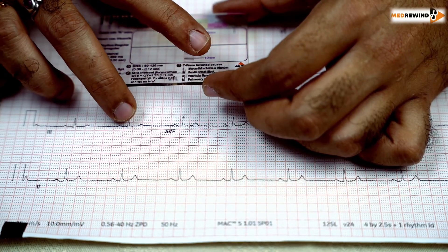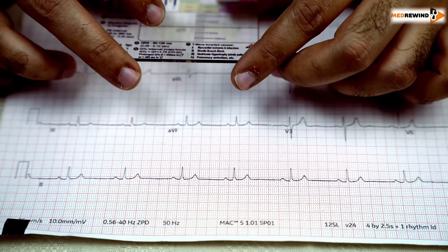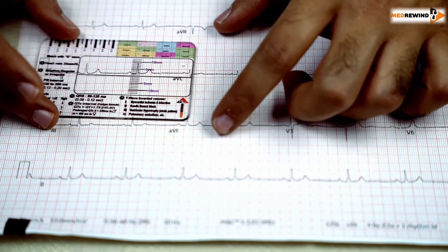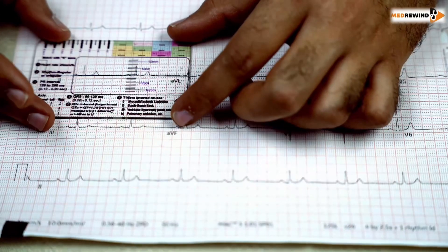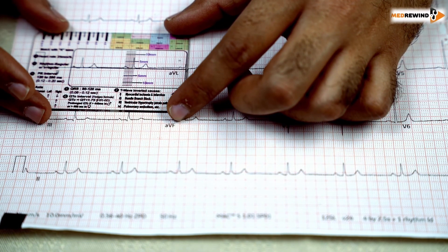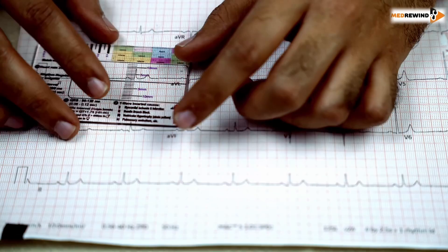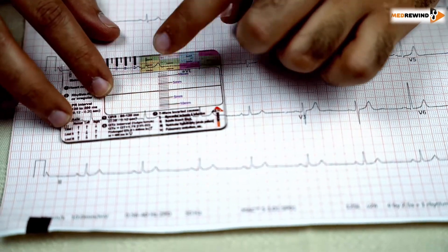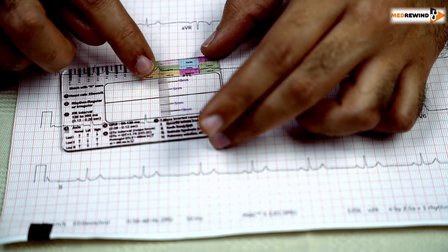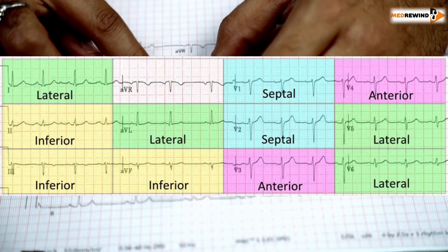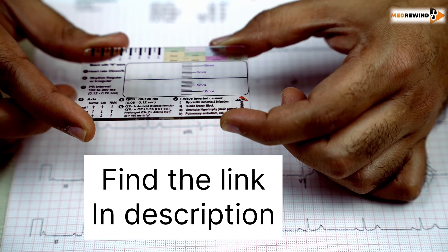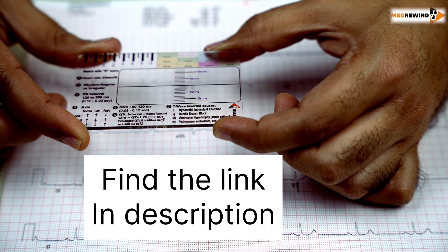The seventh step is T wave inversion causes. The center part of the scale you match with the isoelectric line and see the elevation — how much is the elevation and whether it is significant or not. You can see the colorful part showing whether the involvement of 2, 3 AV of the inferior wall or which wall is involved. That is all about the ECG ruler.